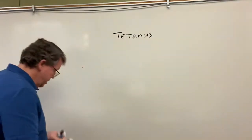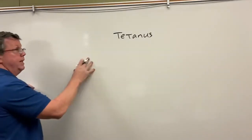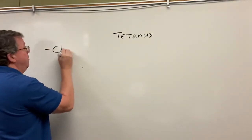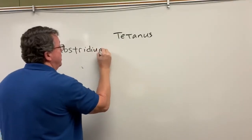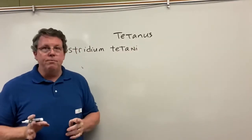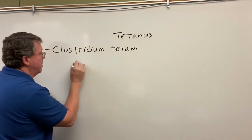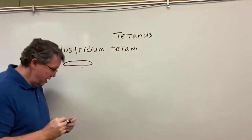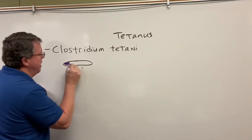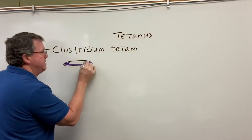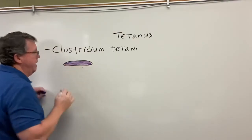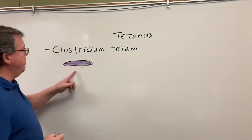Tetanus is caused by a bacteria called Clostridium tetani. Clostridium tetani is a rod-shaped bacteria, so it's called a bacillus. It is also a gram-positive bacteria, meaning it stains when you go through gram staining.